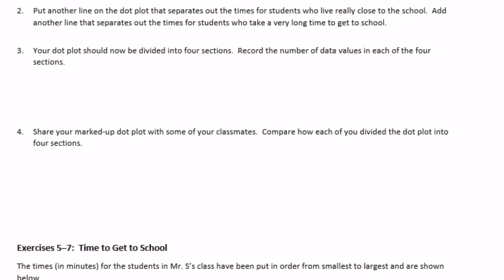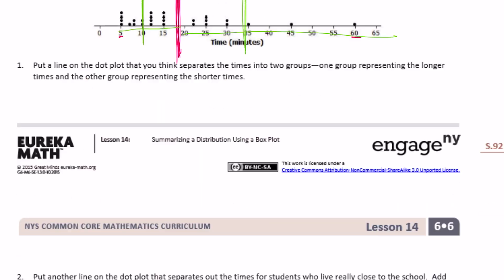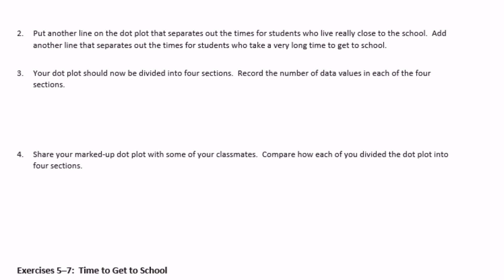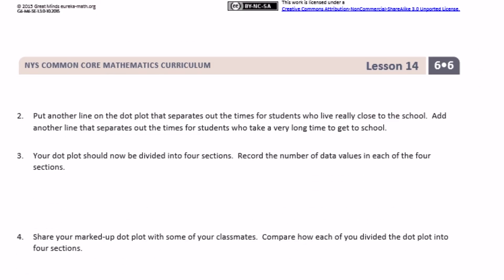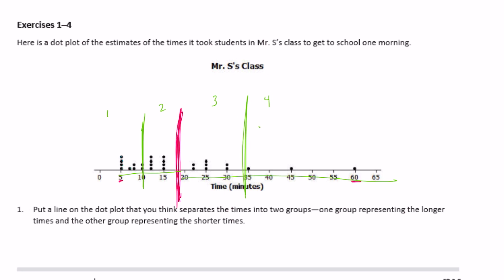Three, your dot plot should now be divided into four sections, which ours is. We have one, two, three, four sections. Record the number of data values in each of the four sections. So we're just going to record the data on the divisions. It can be different based on where you put your lines. But I'm going to say in the lower, actually, let's just say, let's label the quartile. So in quartile one, quartile two, quartile three, and quartile four. How many we have in each section? How many data points? So quartile one, I have one, two, three, four, five, six, seven.